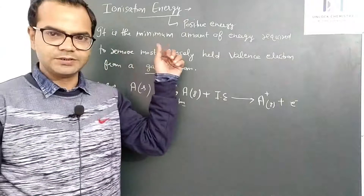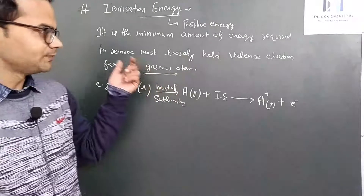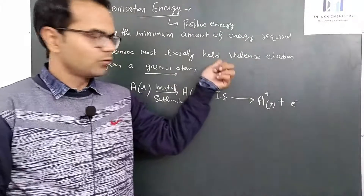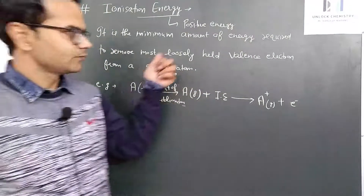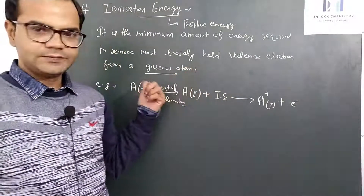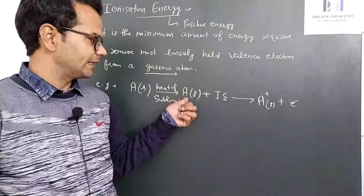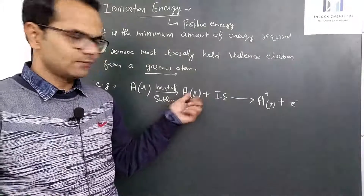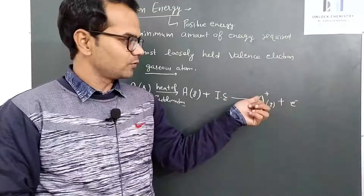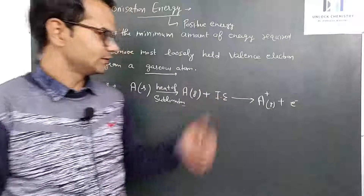Ionization energy will always be positive because all atoms require energy to lose valence electrons. Valence electrons can be easily removed from a gaseous atom because they experience minimum attraction force with the nucleus. When a gaseous atom absorbs a certain amount of energy, it loses its outermost electron, which experiences minimum attraction with the nucleus.